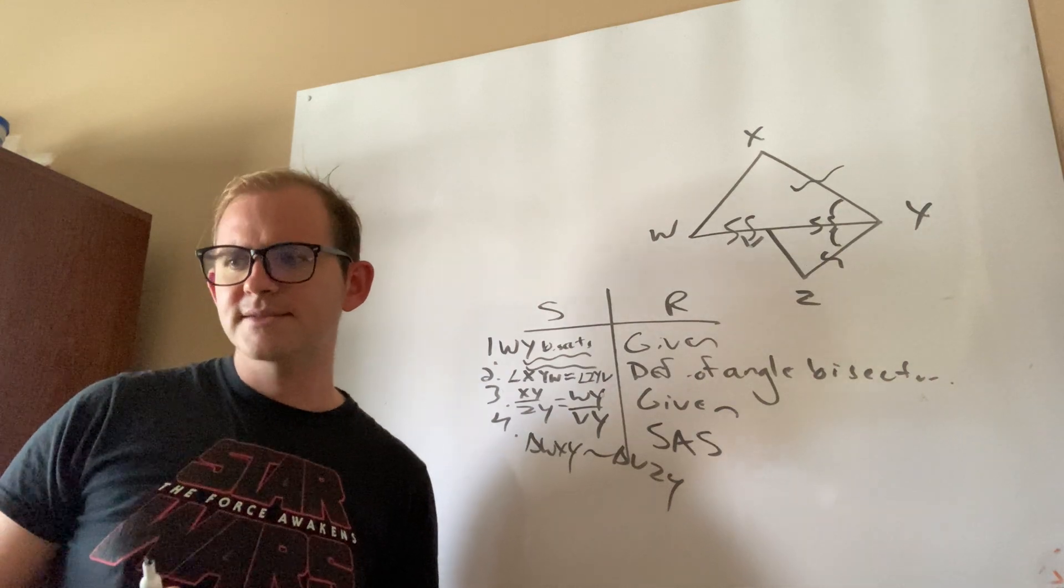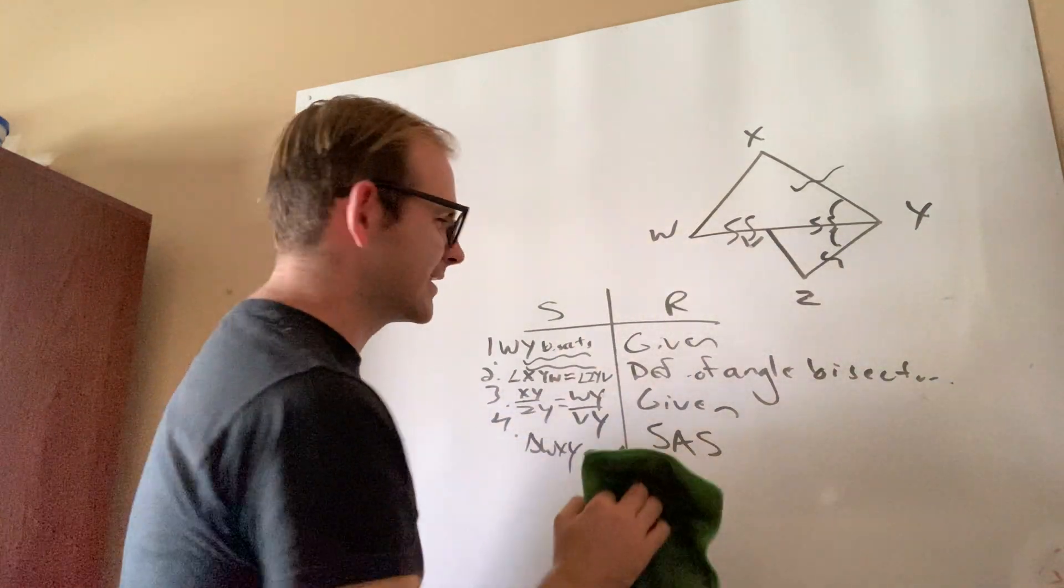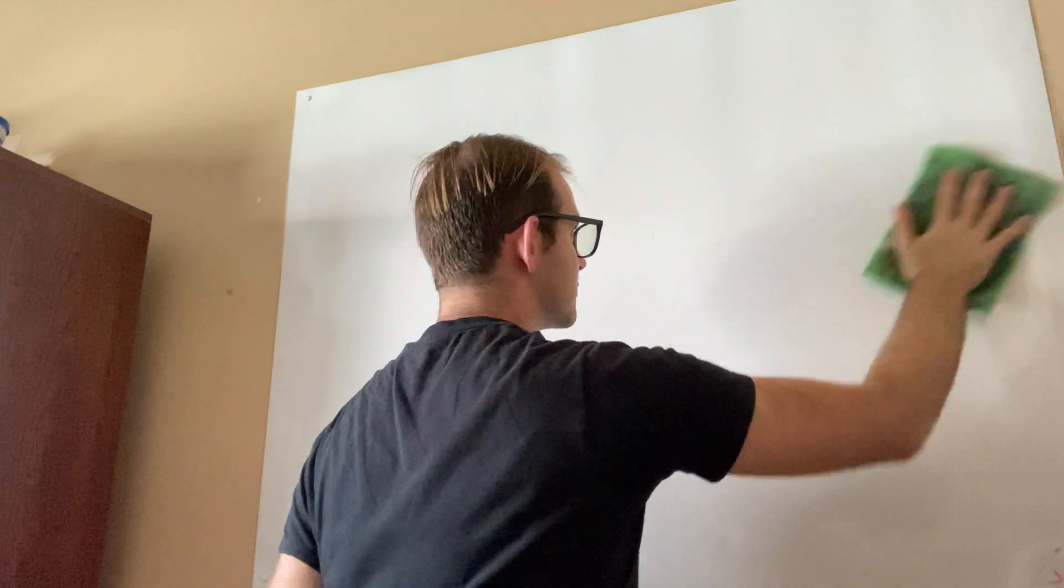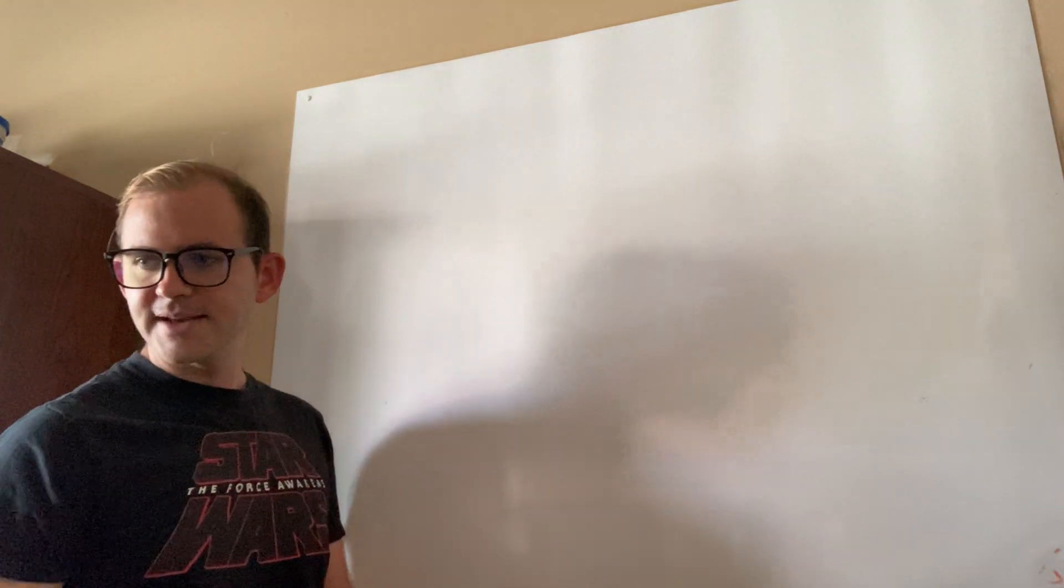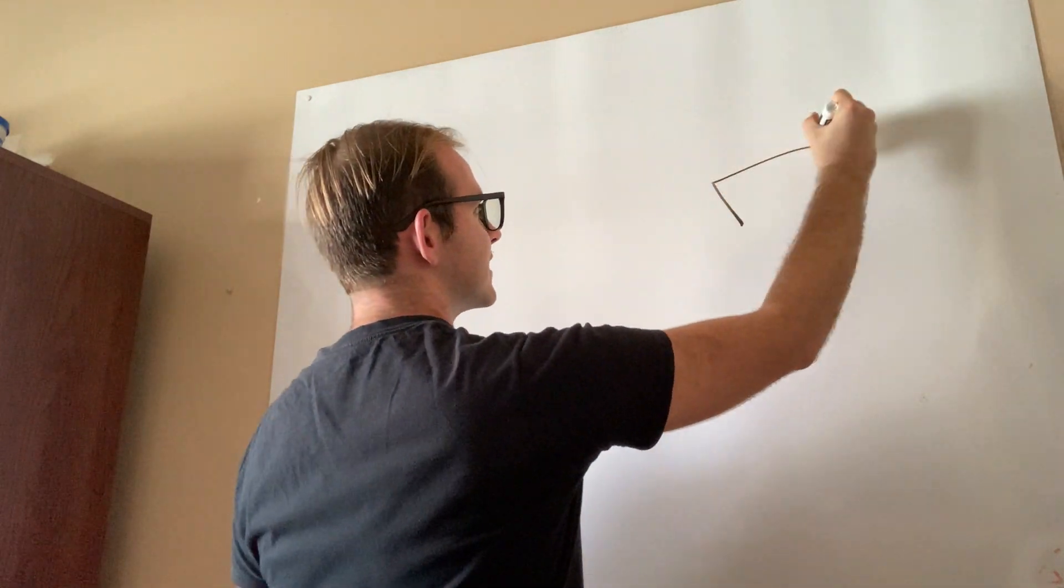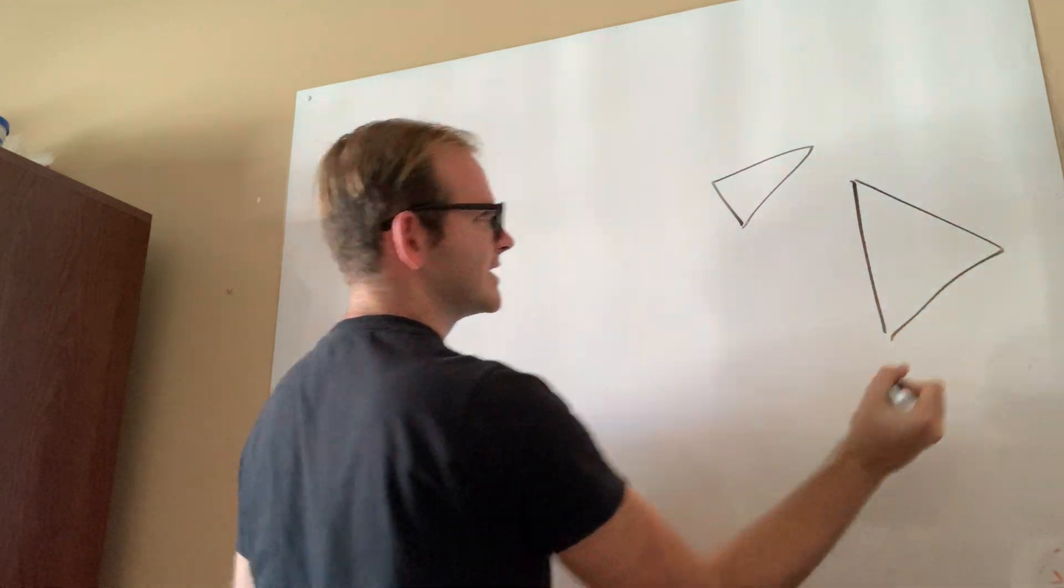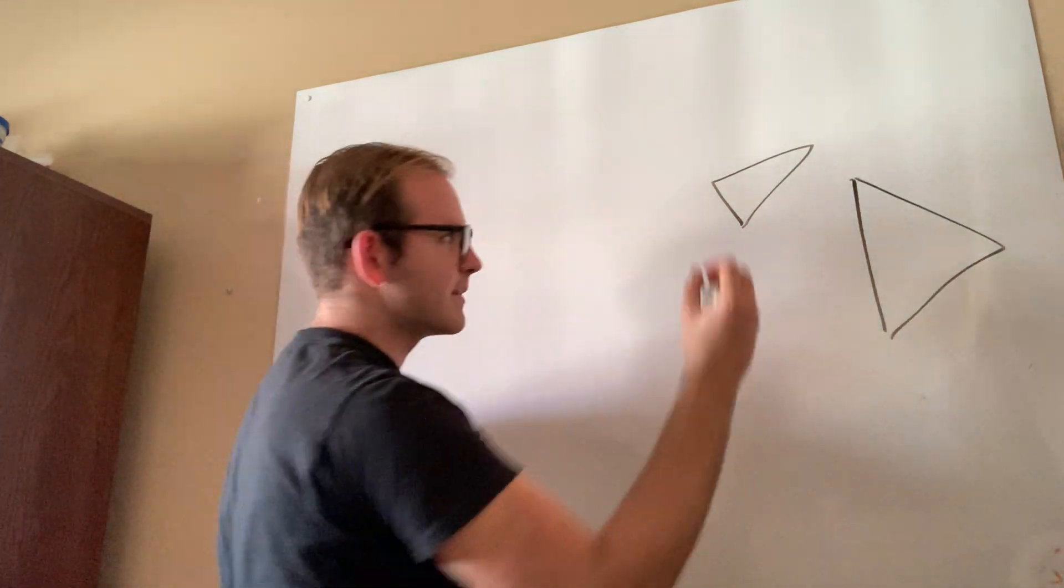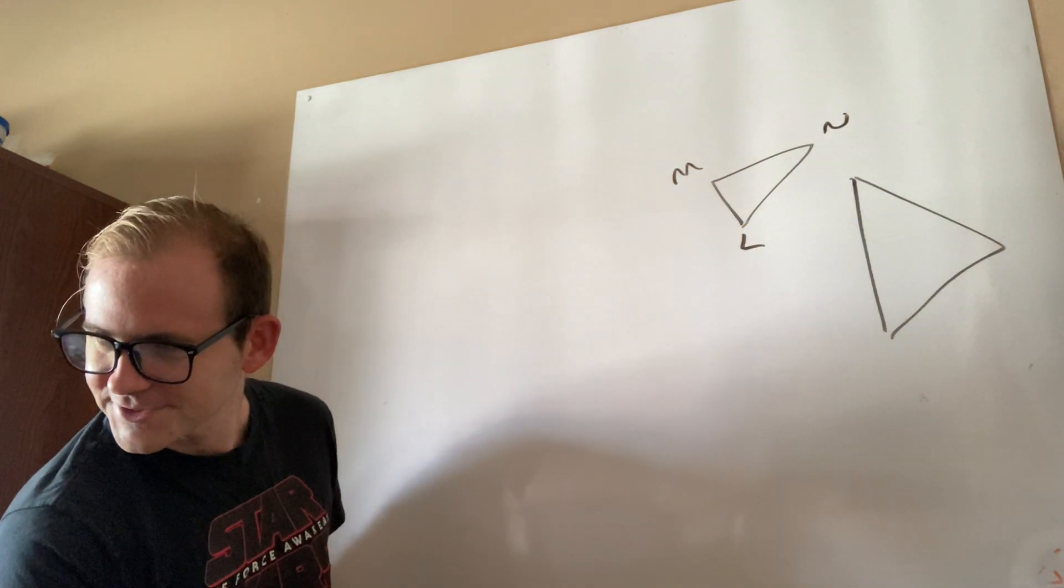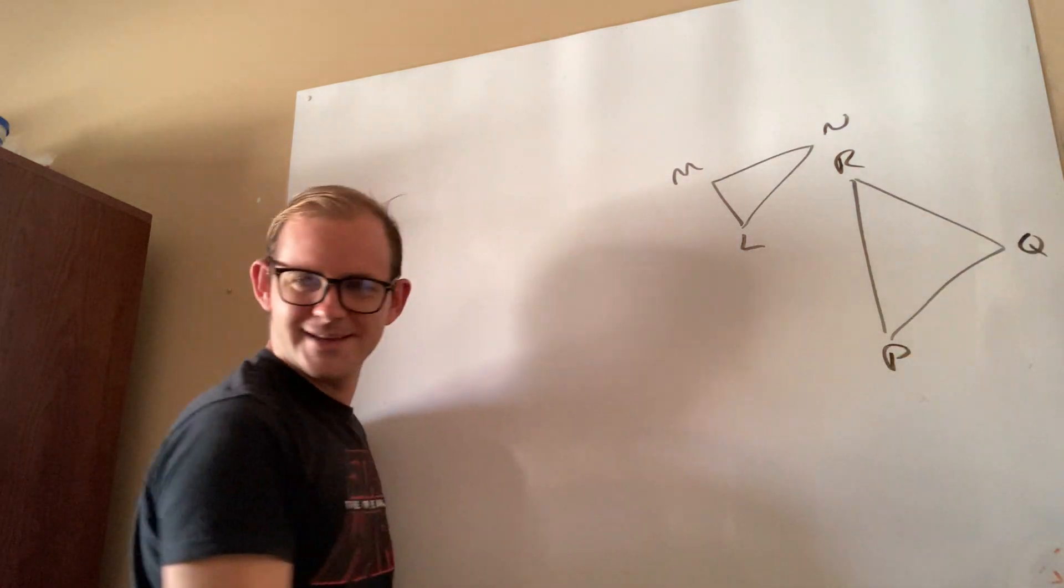All right. Last but not least, guys, let's take a look at example number six. I know this has been really long, and I apologize for that, but I want to make sure that we're thorough about what we're doing. All right. So example number six. All right. They gave me two triangles kind of like this. Again, I apologize if these are really ugly and drawn really badly. You guys know from previous experience that this is most certainly not my strong suit. RQP.